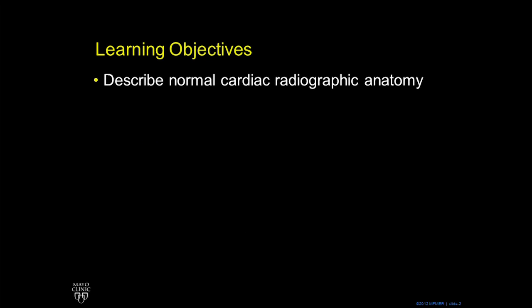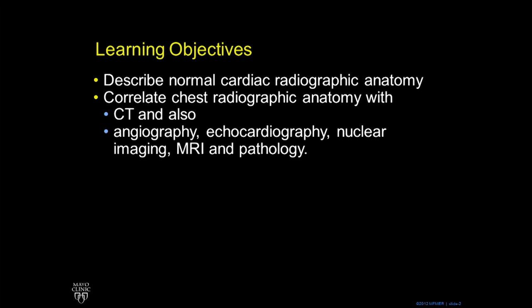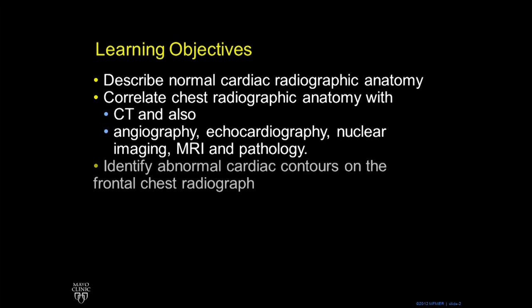The learning objectives are: we're going to look at the normal cardiac radiographic anatomy. We're going to correlate the chest x-ray with CT scan mainly, but also with conventional catheter angiography, echocardiography, nuclear imaging, MRI, and also even pathology. And we're going to show some abnormal cases of abnormal contours on the frontal chest radiograph.